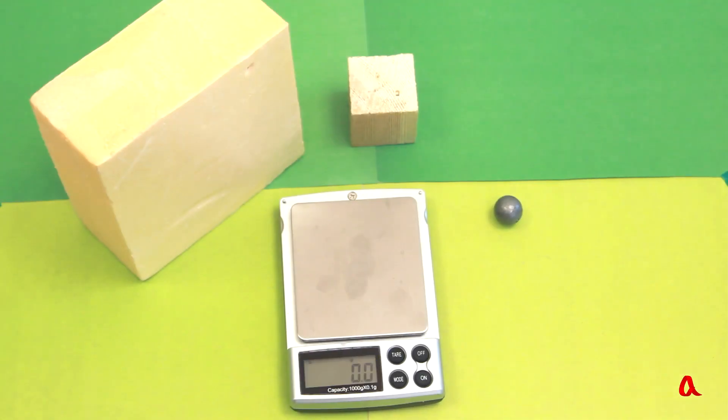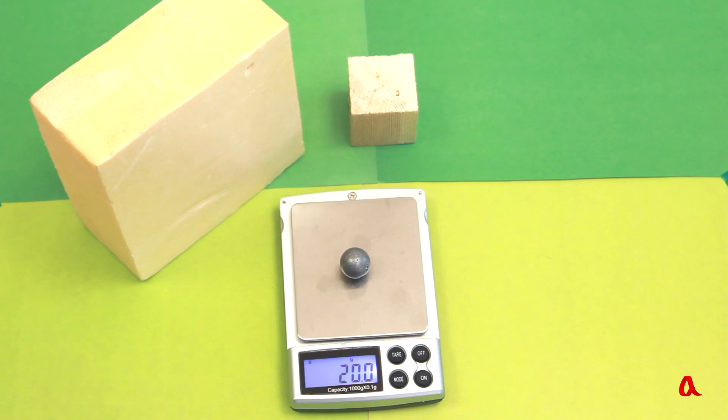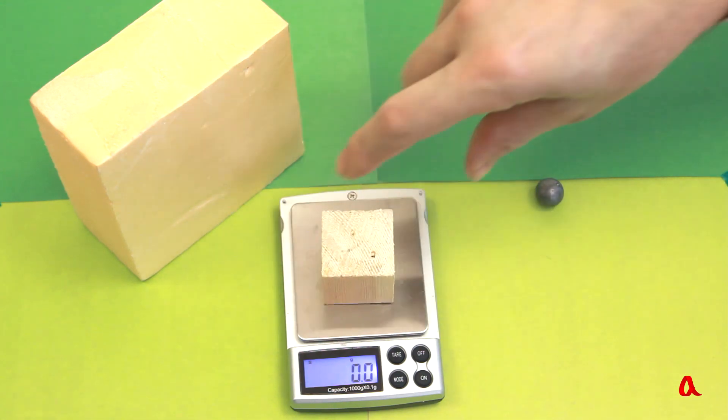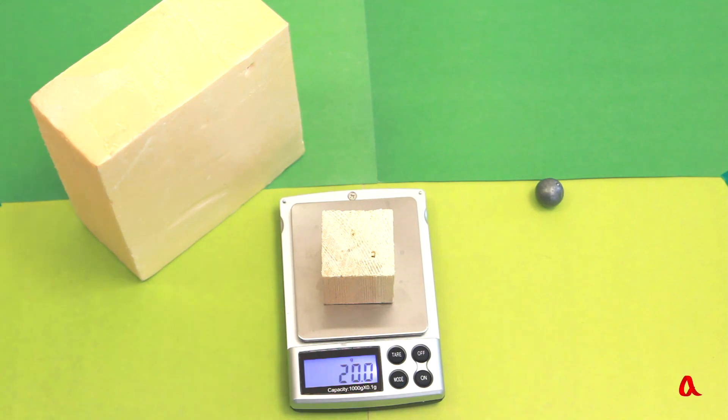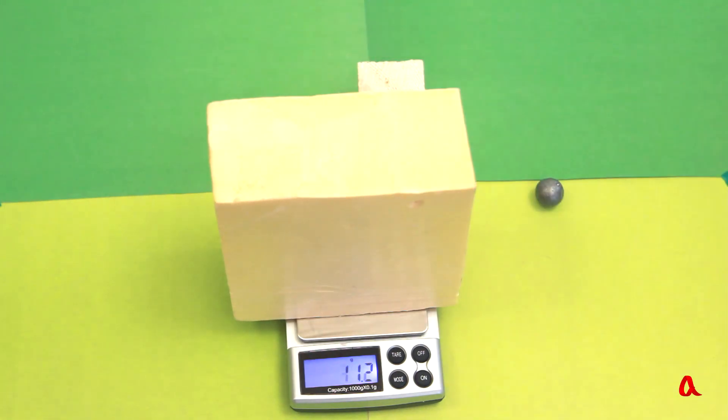Let us take a lead ball, a wooden cube, a foam bar and weigh them up. The small lead ball weighs 20 grams. The wooden cube weighs 20 grams as well and the big foam bar also weighs 20 grams.